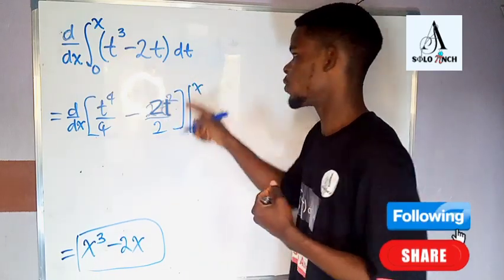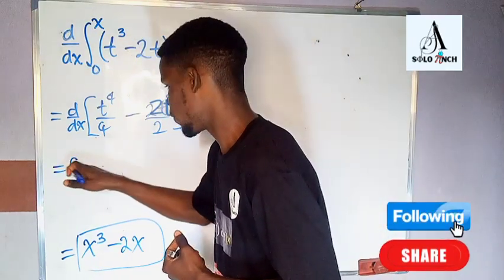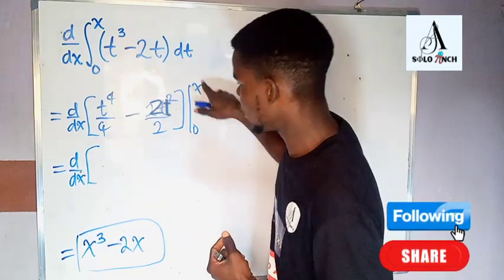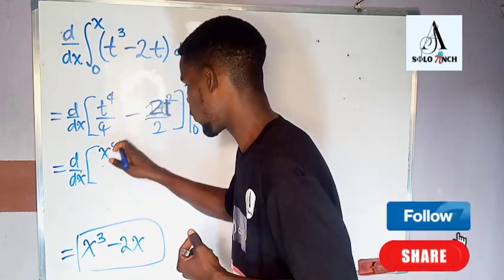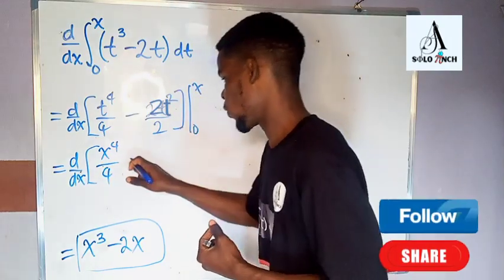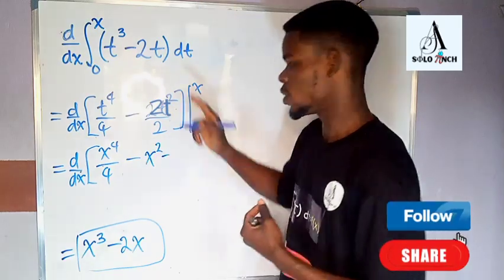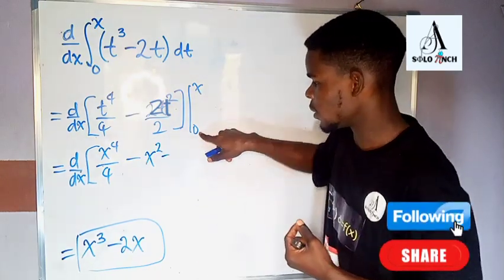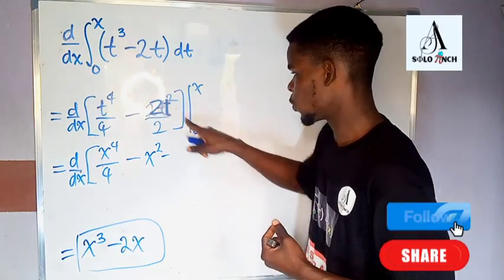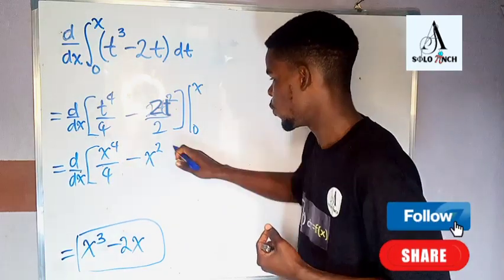Don't forget that we have to evaluate this from 0 up to x. So let's substitute: when t is equal to x, that will be x to the power of 4 divided by 4, and the 2s cancel giving x squared. Then we substitute the lower bound 0 — when t is 0, this gives 0 over 4 which is 0, and also 0 for the other term. So we are subtracting 0, which means we won't subtract anything.